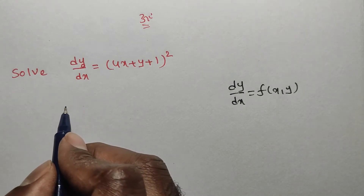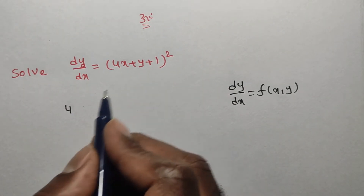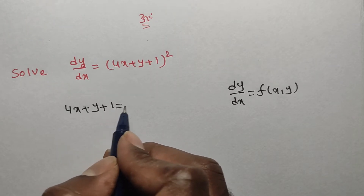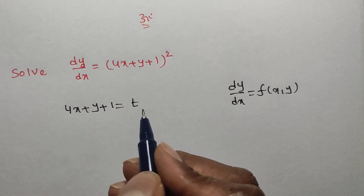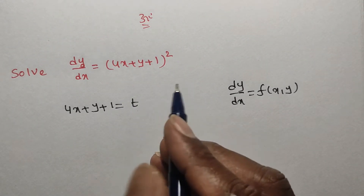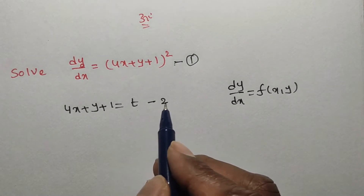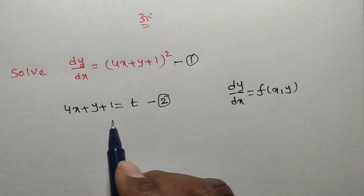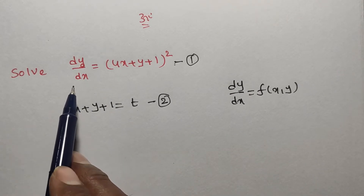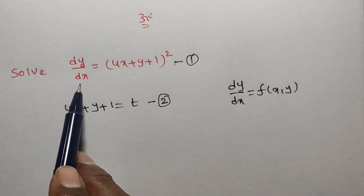So we go for the substitution method. In this method, I am considering the bracket: let t = 4x + y + 1. Consider the given equation as equation number 1, and this substitution as equation number 2. Now the left side has dy/dx, so we have to differentiate equation 2 with respect to x.